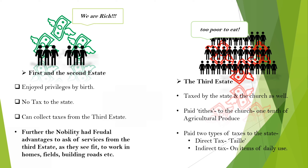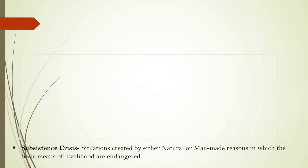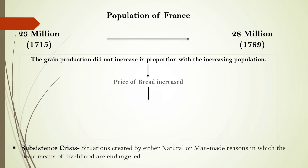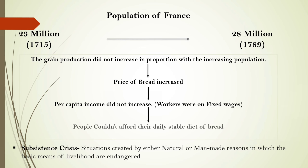Now we are going to study what subsistence crisis is. Subsistence crisis is an extreme situation created by either natural or man-made factors, in which the basic means of livelihood are endangered. Between 1715 and 1789, the population of France rose from 23 million to 28 million, but grain production could not keep up with the growing numbers and demand.